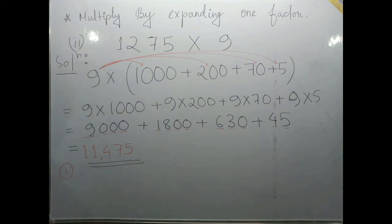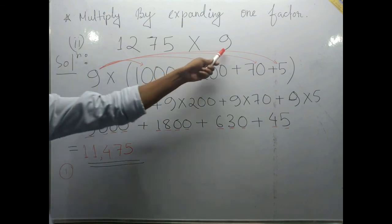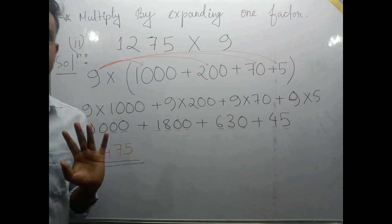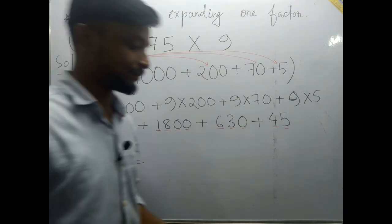11475. If you multiply 9 into 1275, you will get the answer as 11475.